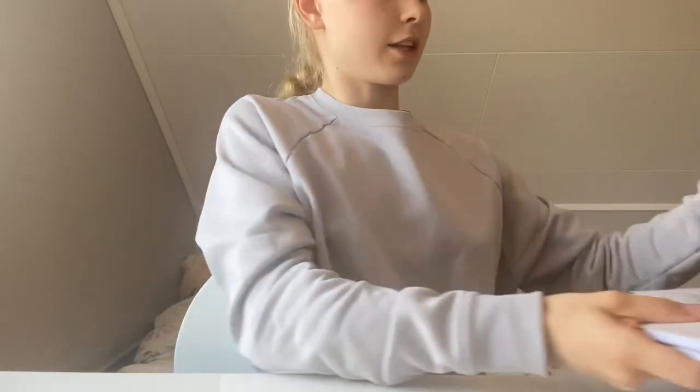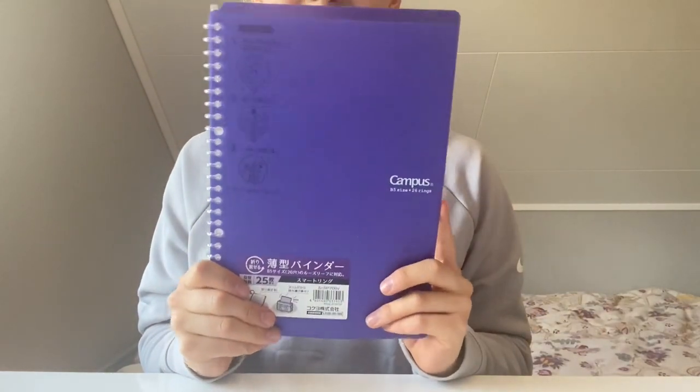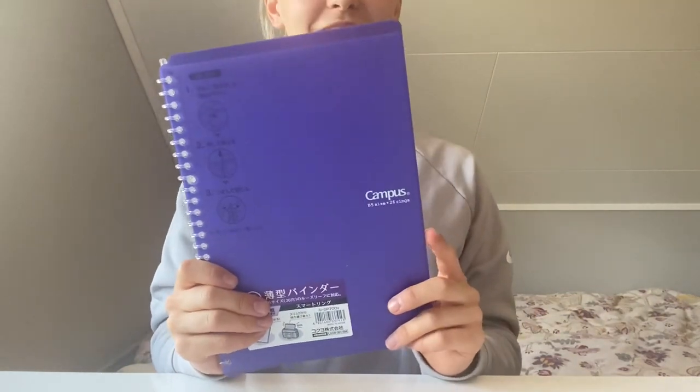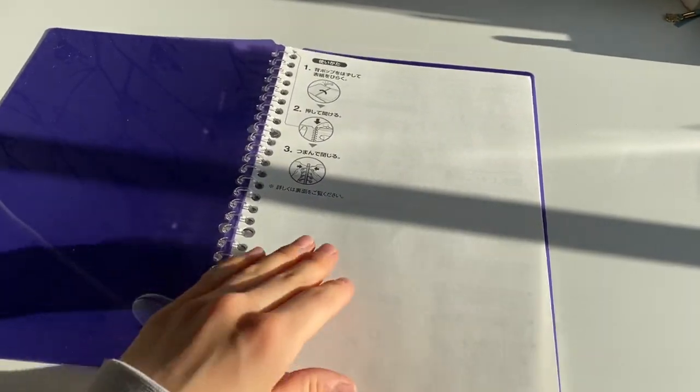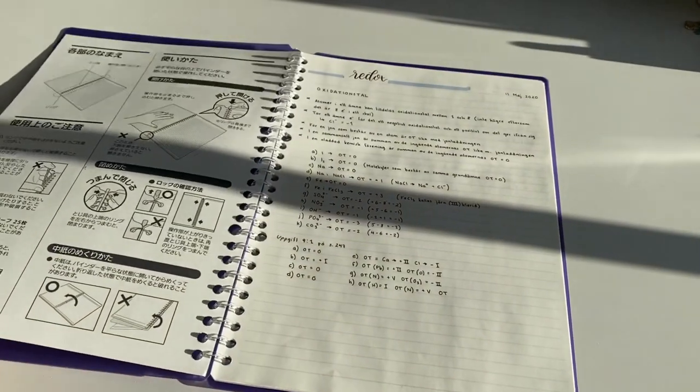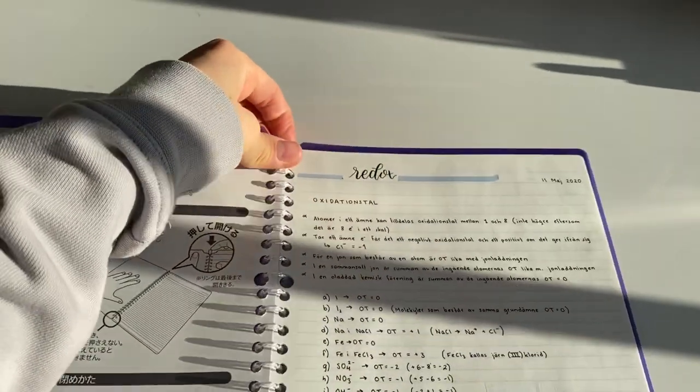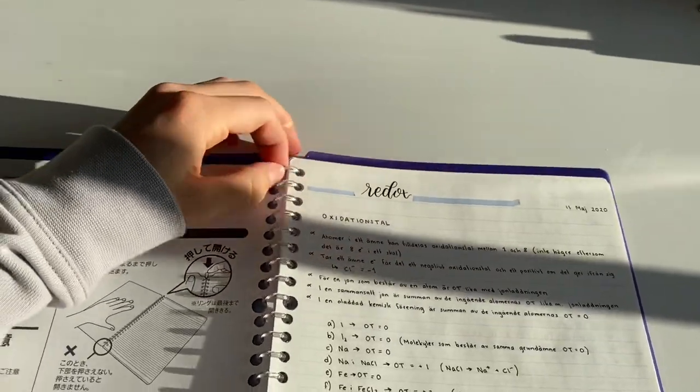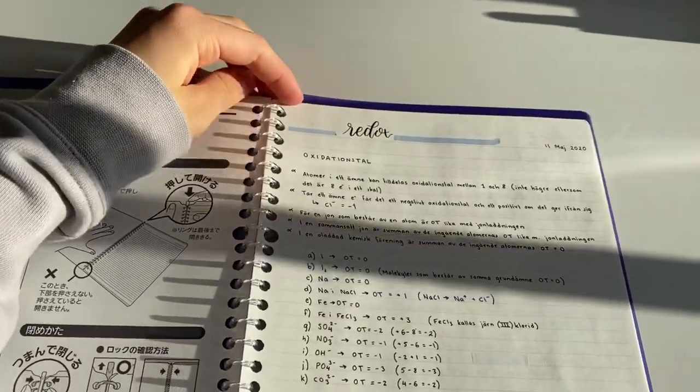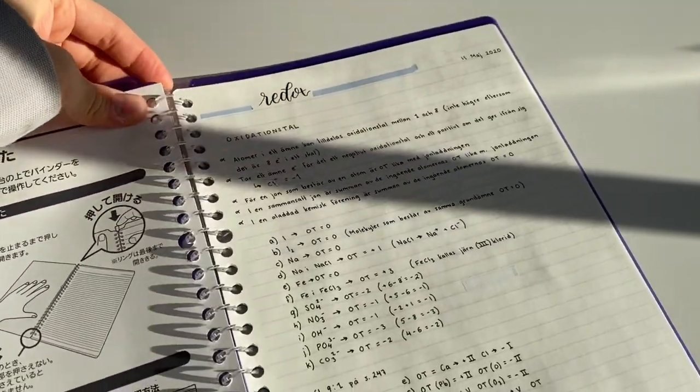I also got another notebook and it's the Kokuyo Campus Smart Ring Binder Notebook, I think it's called. The thing about this notebook is it's not your usual notebook. It's a binder notebook and that's something that's really cool. I wanted to try it out. You can open it as a regular notebook, but you can open it up like a binder and then sort the sheets as you like, so you can organize your notes.